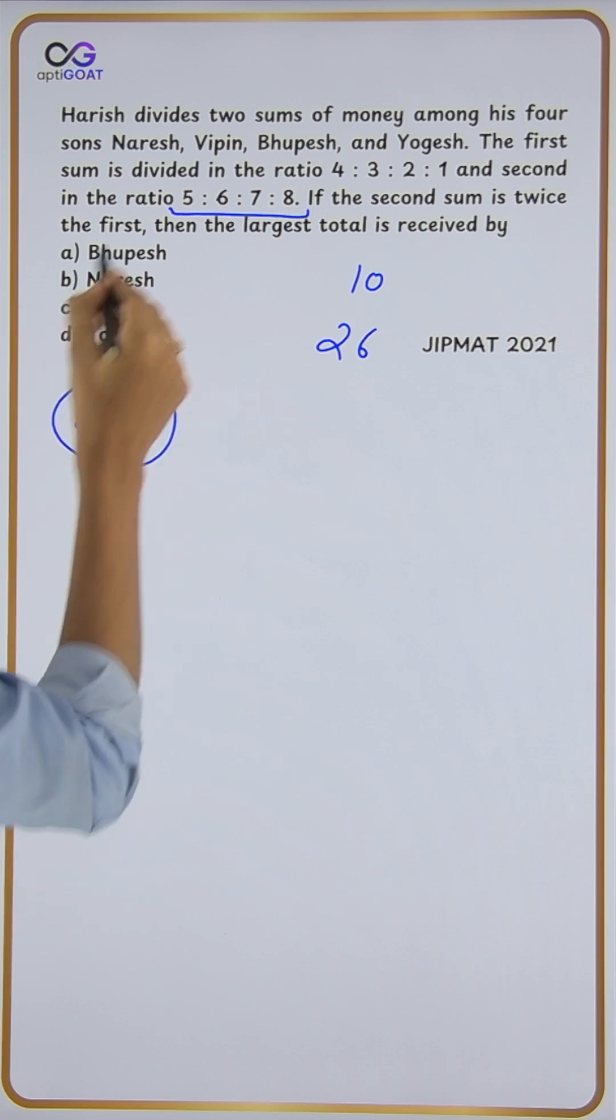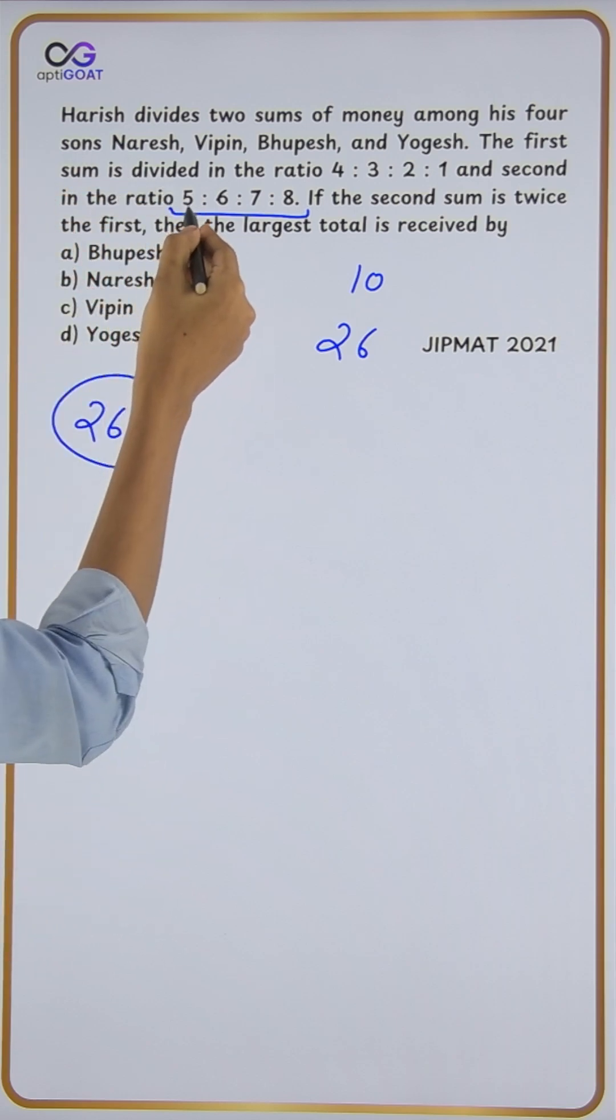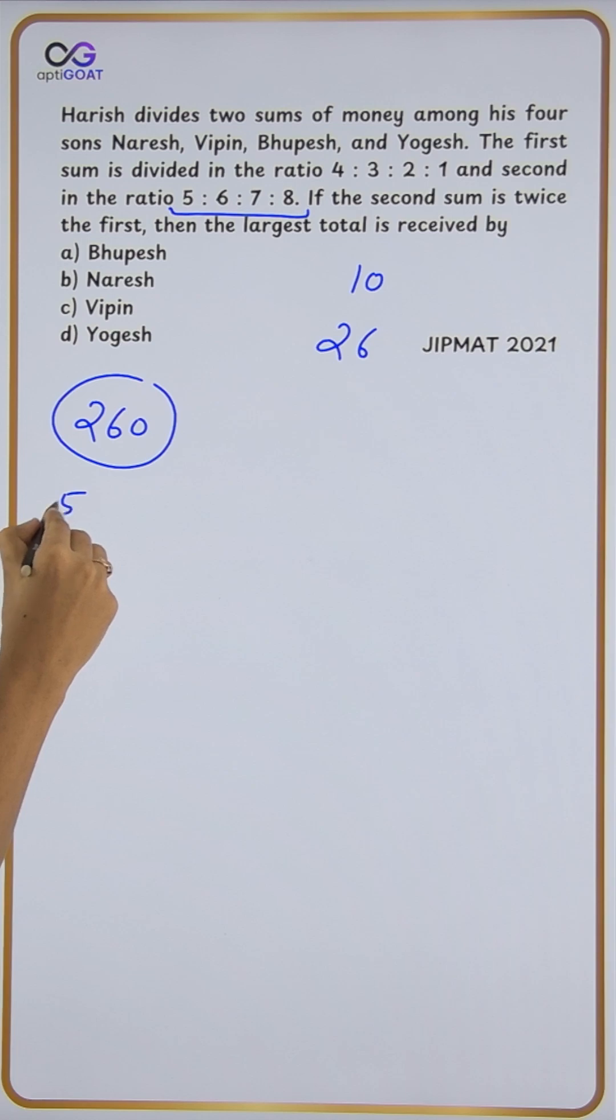If 260 is the total for the second sum, how much does each person get? The first gets 5/26, that is 50. Second gets 60, third gets 70, fourth gets 80.